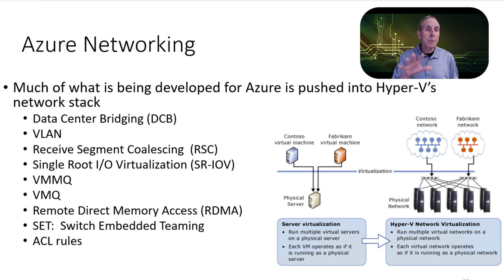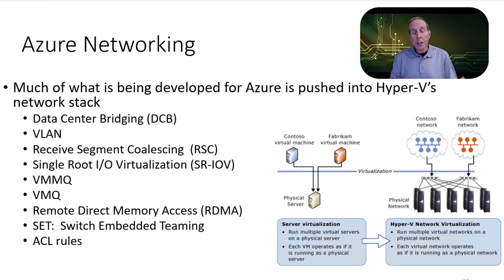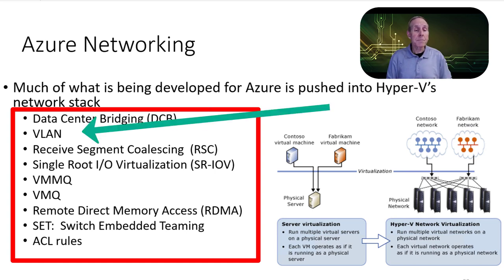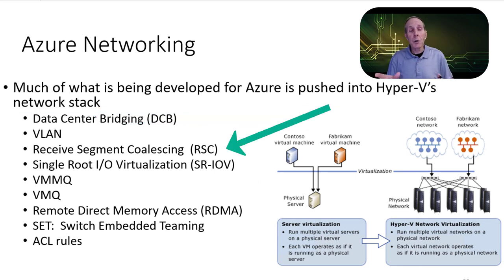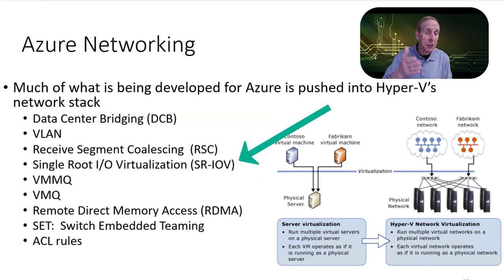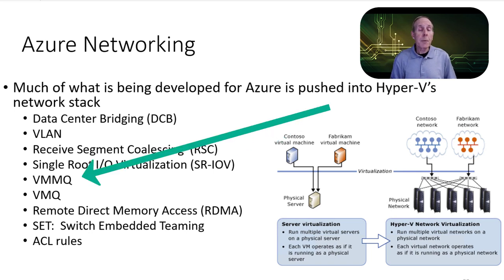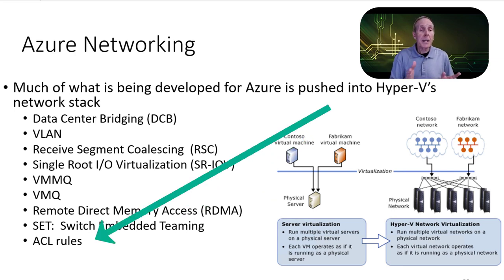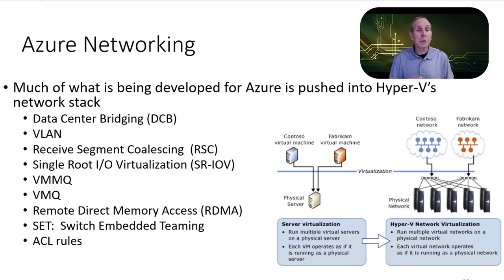Our next video will be on Hyper-V networking. It's a fascinating topic, and because Hyper-V plays such a big role in Azure and data centers, Microsoft is pushing tons of sophisticated networking functionality into the Hyper-V switch — most of it done by PowerShell. Things like data center bridging, VLANs, receive segment coalescing, single-root I/O virtualization so you can talk directly to the network card, VMMQ, VMQ, remote direct memory access, switch embedded teaming, and ACL rules. We'll also go into internal, external, and private networks. Be sure to catch our next video on Hyper-V networking.